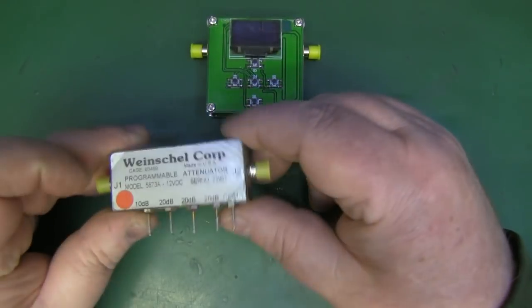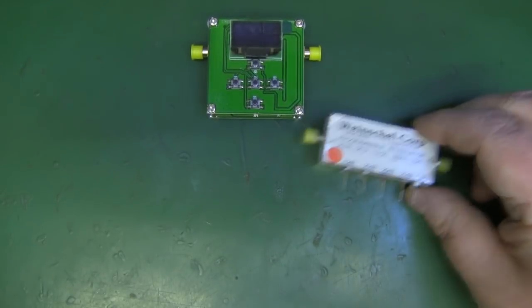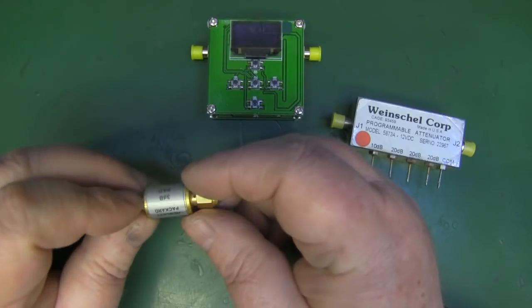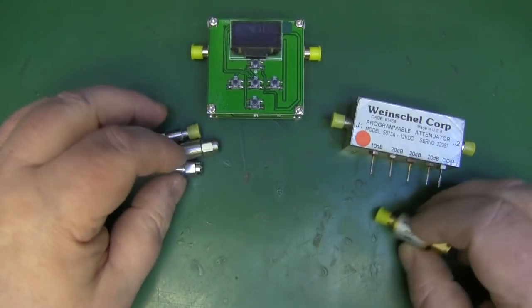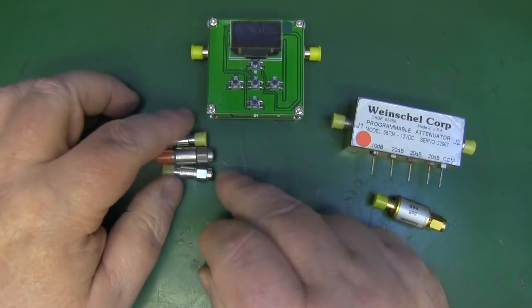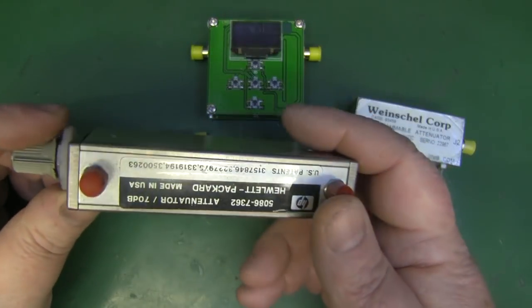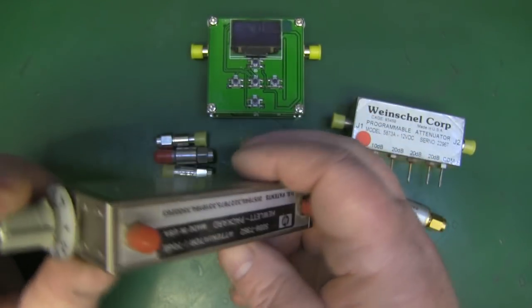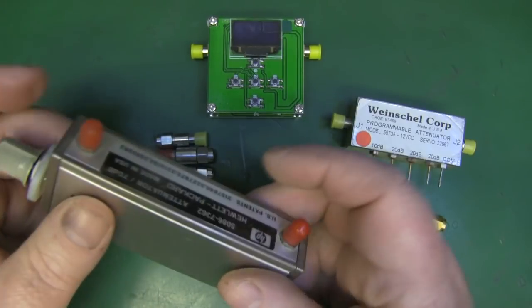Now I have got various attenuators here in the lab. I've got this nice programmable one here, a fixed 3 dB one, several ones that are around 3 dB to 6 dB, and I've also got this adjustable one that's really nice, HP1, but it only goes up in increments of 10 dB.